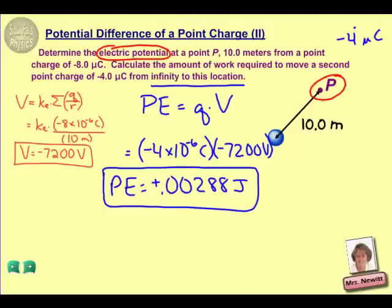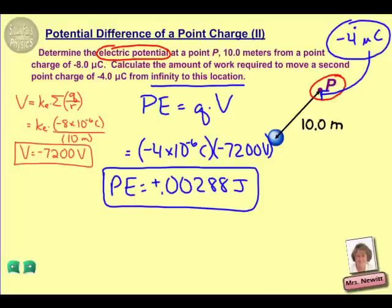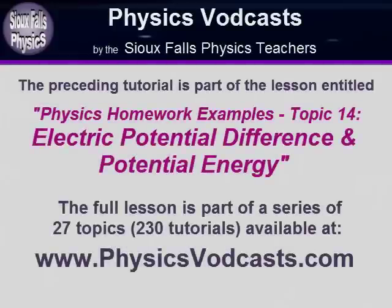Notice we had a negative value for voltage and a negative charge for our second charge, so when we put those together we end up with a positive value. The significance of the positive result says that if we start with this little charge out at infinity and want to move it to point P, we are in fact going to have to do work because we're bringing it closer to a negative charge already near that location. So the work done to move it from infinity to point P is 0.00288 joules. Thank you.